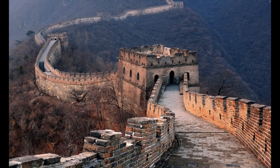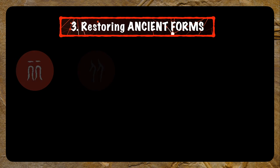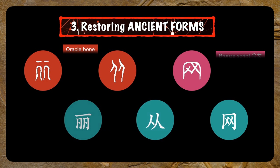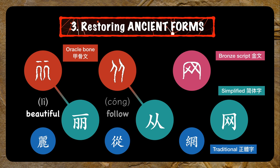If this name sounds familiar, he's the guy behind the Great Wall and the Terracotta Army — who also burned books and killed a lot of people. Other simplifications that actually restored the ancient form of characters include 丽 (beautiful), 从 (follow), and 网 (net).